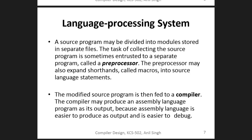During pre-processing, macros such as include stdio are processed into the source language. The modified source program is then fed to the compiler. The compiler may produce an assembly language as output, because assembly language is easier to produce as output and easier to debug.